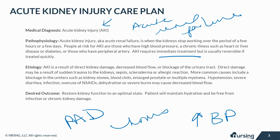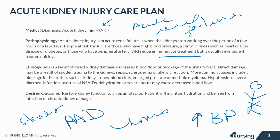AKI is a result of direct kidney damage, decreased blood flow, or blockage of the urinary tract. Direct damage may be a result of sudden trauma to the kidneys, sepsis, scleroderma, or an allergic reaction. More common causes include a blockage in the ureter, such as kidney stones, blood clots, enlarged prostate, or multiple myeloma.